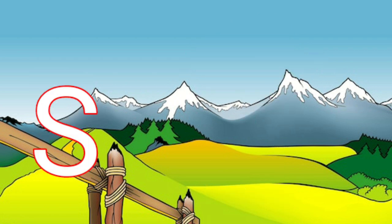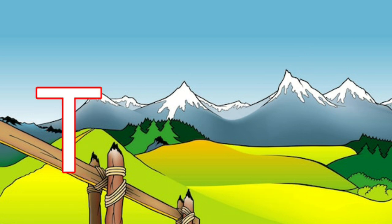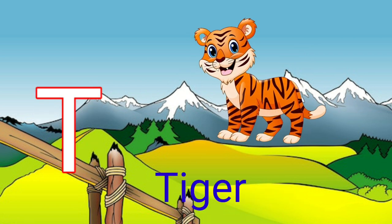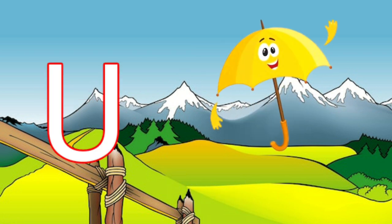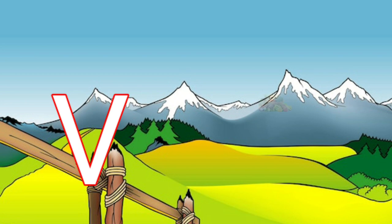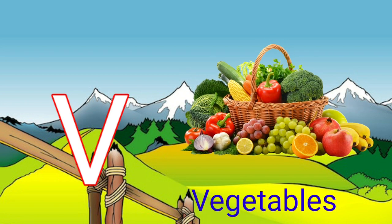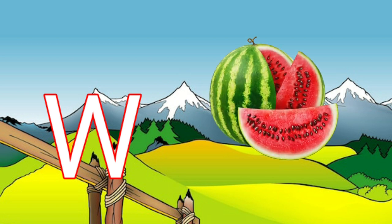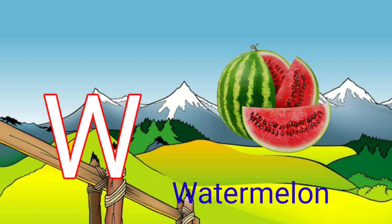S for stick, T for tiger, U for umbrella, V for vegetables, W for watermelon.